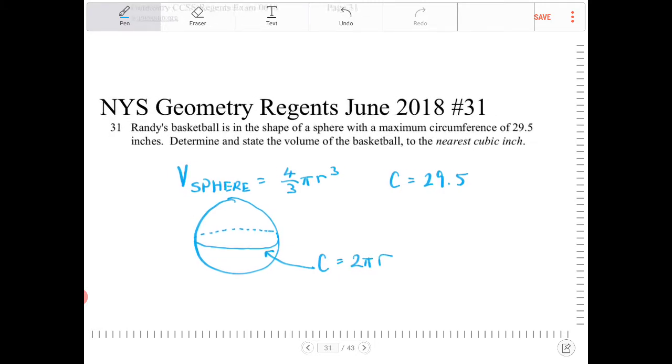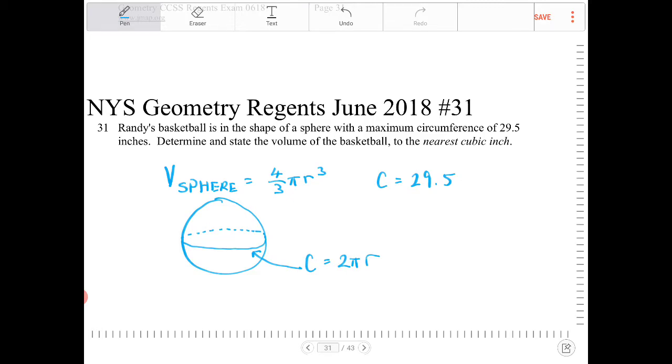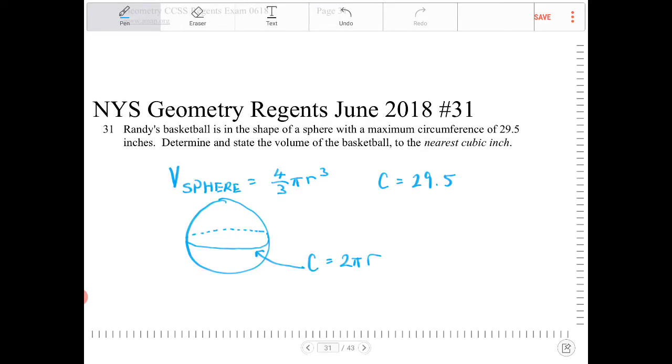We can then extract from that information that they told us the value for r. So I can say 2 pi r is equal to 29.5. We can divide both sides by 2 pi and r will equal 29.5 over 2 pi.